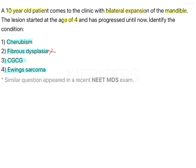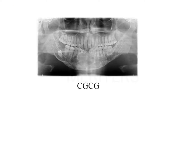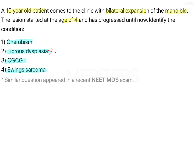Central giant cell granuloma is also not a bilateral condition per se, and it is not very common in younger individuals or teenagers, nor does it regress like that. The lesions of central giant cell granuloma are not bilaterally symmetric — it can be unilateral or midline, and it affects the cortical plates as well, which is very evident on the OPG. That eliminates CGCG.